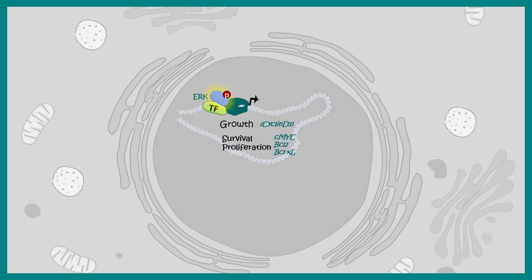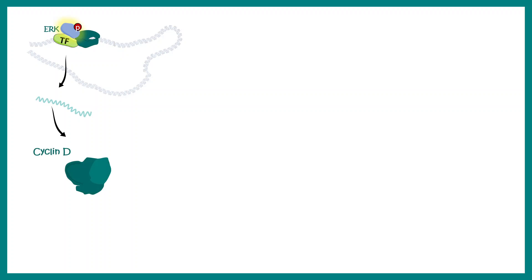From this gene expression profile, we can understand that the RAS MAP kinase pathway gives rise to growth, division, and proliferation in terms of a tissue or a cell. RAS MAP kinase pathway is very important for growing tissues or cells that are undergoing division. One of the target genes of the RAS MAP kinase pathway is actually cyclin D.